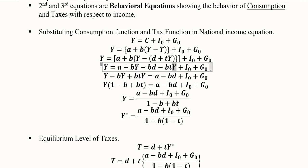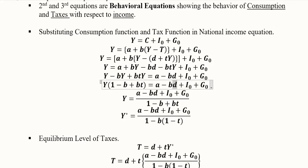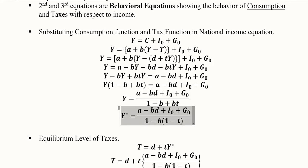We can find the value of Y with straightforward algebra. All Y-containing terms are moved to the left-hand side, Y is taken as a common factor, and autonomous variables and parameters are arranged on the right-hand side. This term is then shifted to the denominator, giving us equilibrium national income Y*.